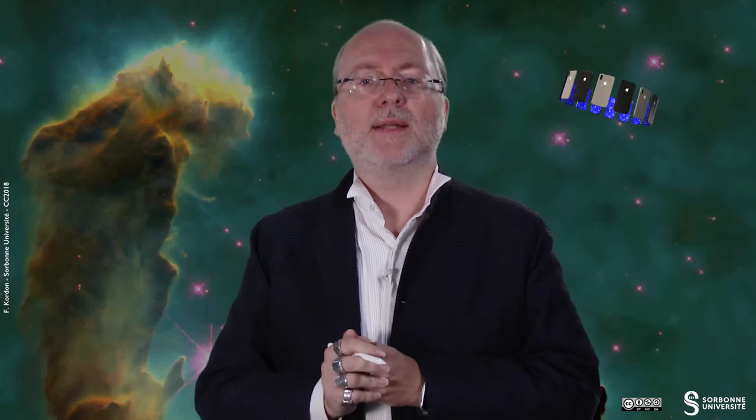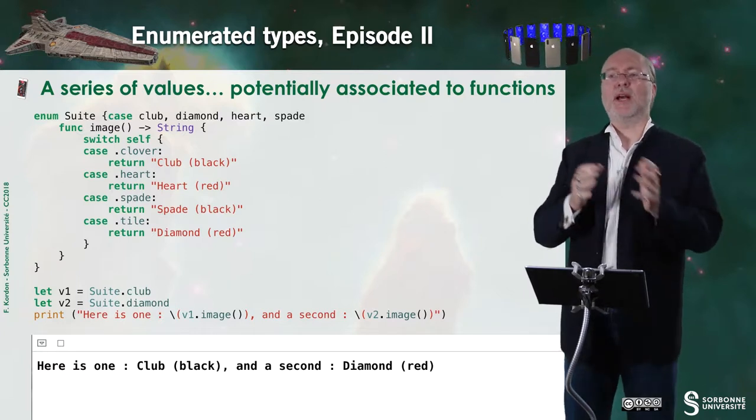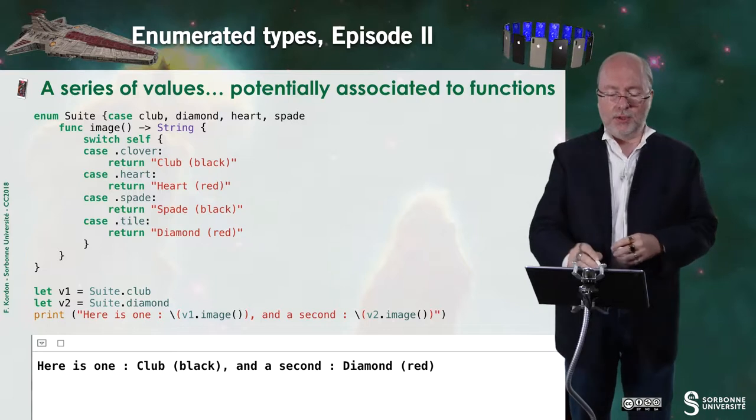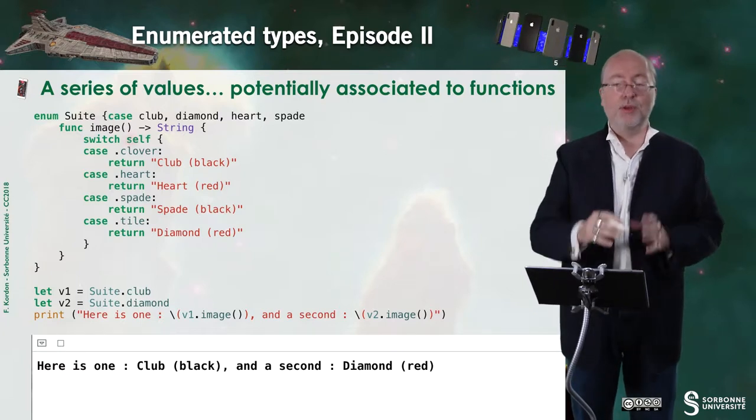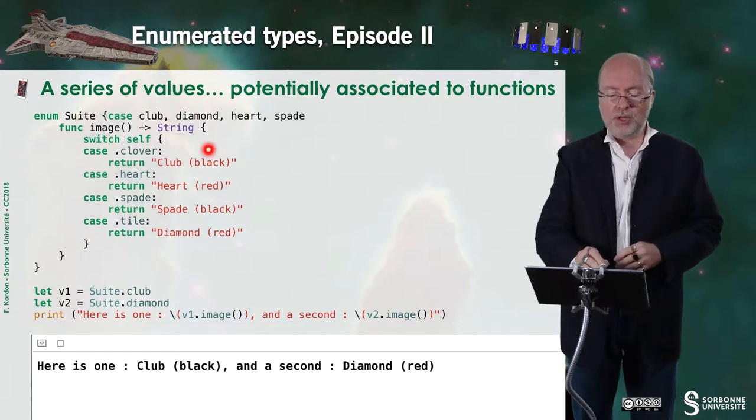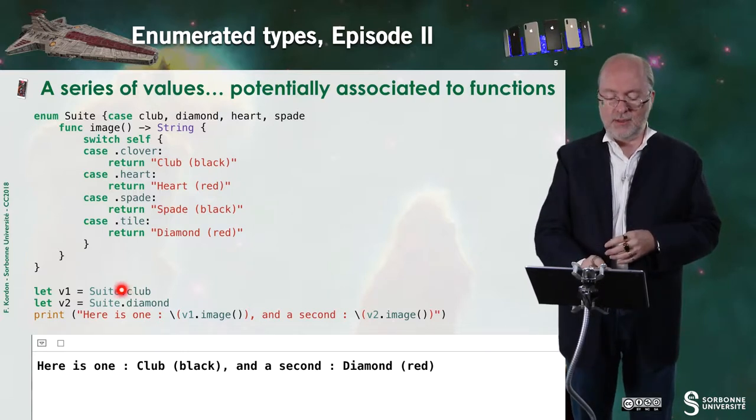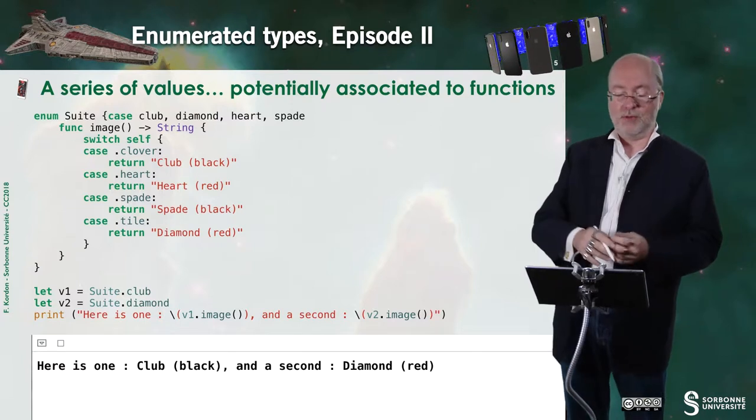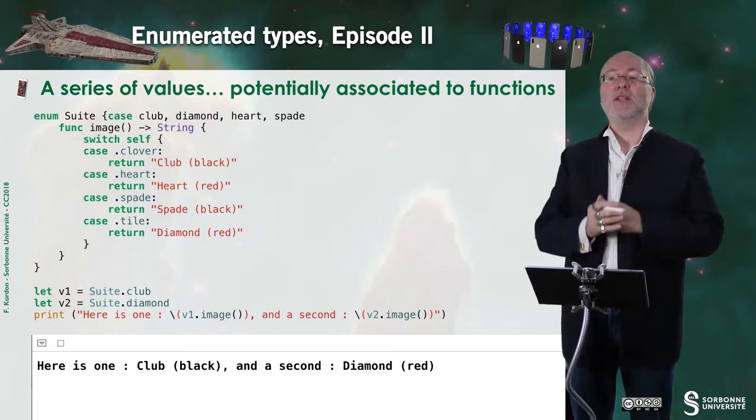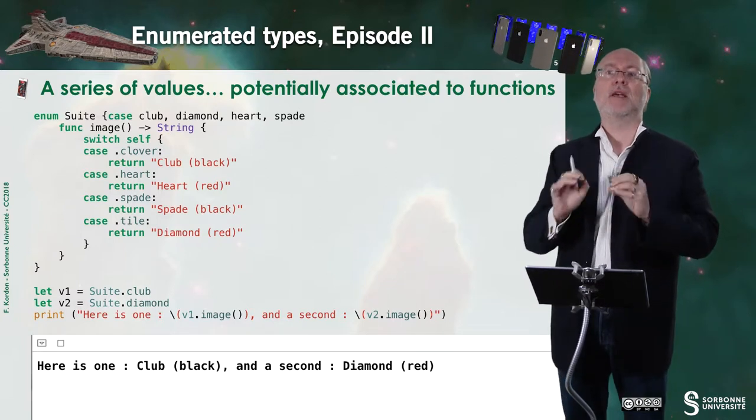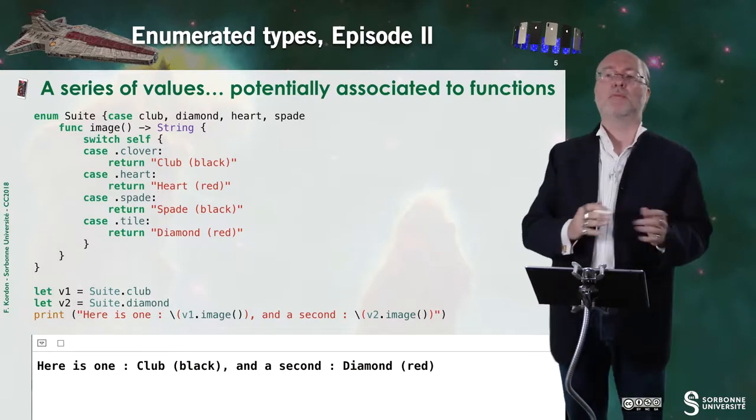Let's have a deeper look at enumerated type in episode 2. So, this series of values is potentially associated to functions. And here is an example where I do so. I can have several functions. Here, I just have one. And this function is called image. It returns a string with more information than just the value of the literal of that type. So here, I can create two variables. One is a club. The second one is a diamond. And in my print function, I do use this image function. So I invoke it as a function applied on any variable of this type. And you see that what's displayed now. So it's different from the previous example in the previous slide.